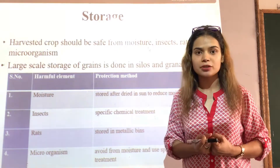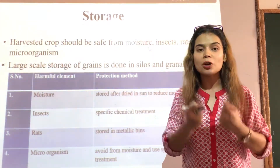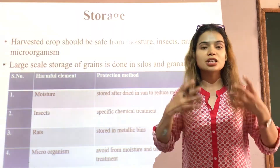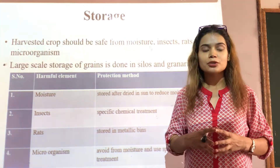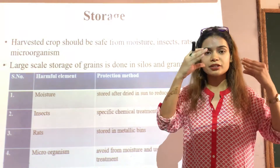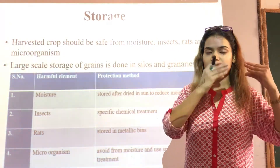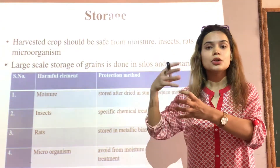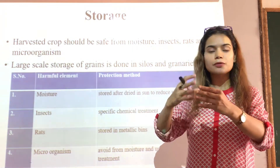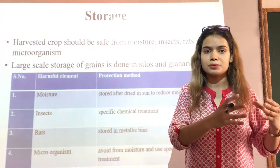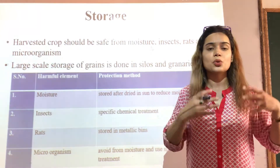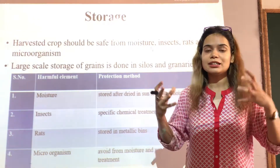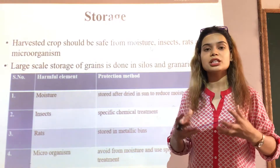Not each one of us are farmers. So in that case it is up to a farmer to store the grains very efficiently and very properly so that everyone can enjoy it. So storage means that once we have harvested the crop, we have to properly store it. For example, wheat is grown in winter season only, and rice is grown in the rainy season, but we need them all throughout the year. So storing is very important.